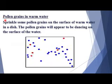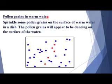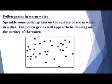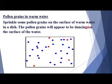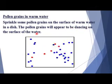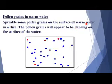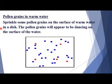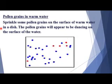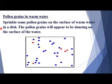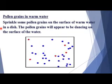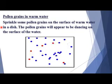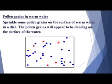Now we will discuss the movement of pollen grains in warm water. Sprinkle some pollen grains on the surface of warm water in a dish — the pollen grains will appear to be dancing on the surface. The reason is that when the water is warm, the movement of particles in the liquid becomes greater. Because of higher temperature, they have more kinetic energy and are continuously moving, so the pollen grains appear dancing on the surface.